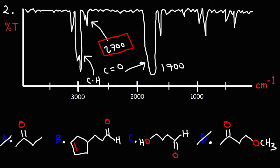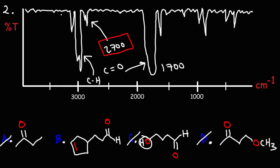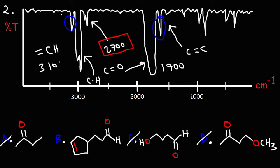Only answer choices B and C have the aldehyde functional group, so we're between those two now. We don't have a very broad O-H signal, so that eliminates answer choice C because it has an alcohol. What we do see is a C=C stretch roughly around 1600, and we see the alkene C-H stretch around 3100. This tells us we have an alkene with a hydrogen on the double bond, which corresponds to answer choice B.